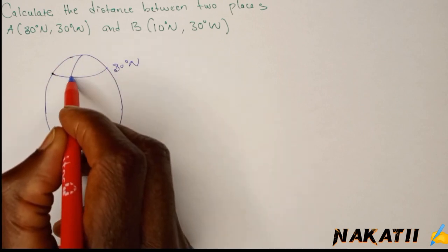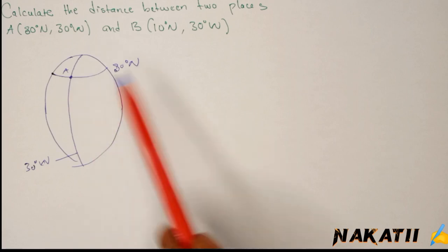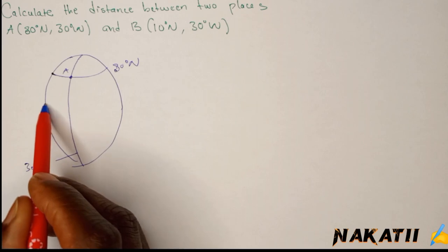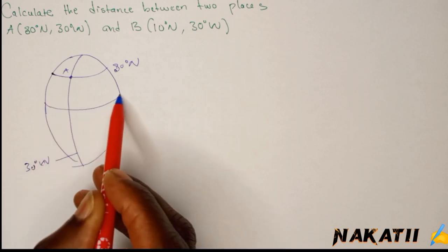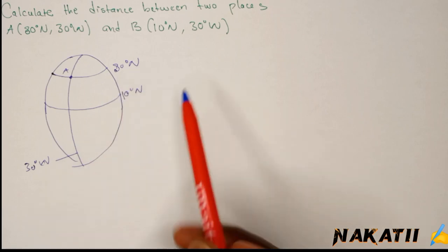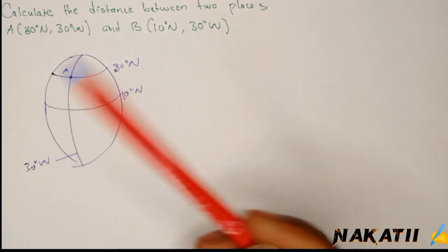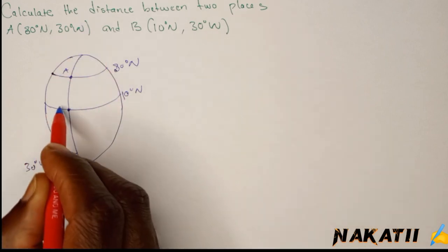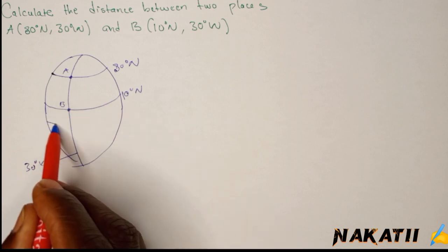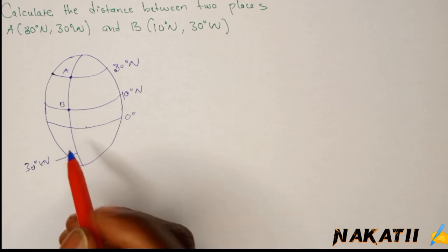Then point B is at 10 degrees north, so we pick another latitude. We assume it is somewhere here, so this one is 10 degrees north and it is 30 degrees west. It is on the same longitude as A, so that point is somewhere here. This is where B is. We can assume maybe our equator is somewhere there.